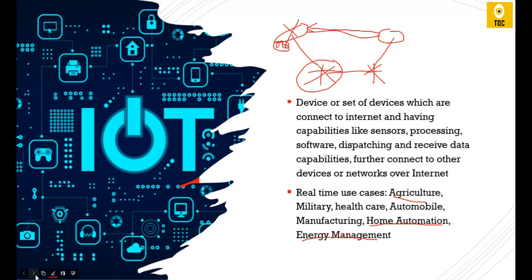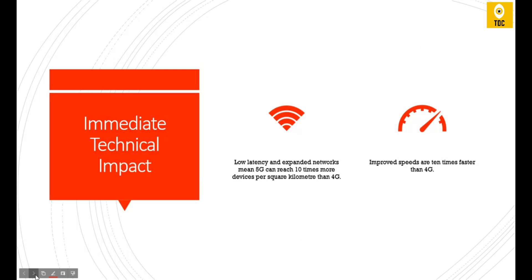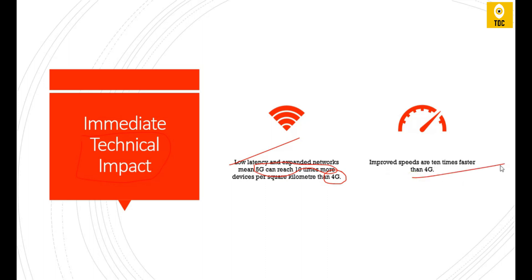Now let's look at the technical impact of 5G on IoT. With low latency and expanded network capability, 5G can reach 10 times more devices per square kilometer than 4G. It is also 10 times faster than 4G — a 10x speed improvement and a 10x improvement in latency.